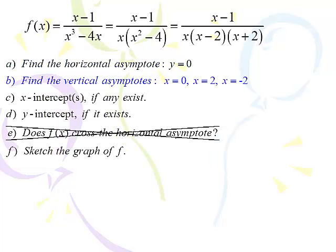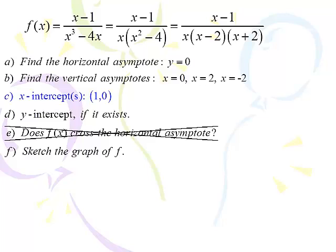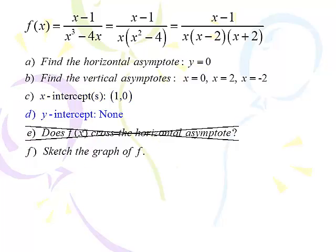Factoring the denominator: pull out an x, giving x(x²-4), which factors to x(x-2)(x+2). We have three vertical asymptotes at x equals 0, x equals 2, and x equals negative 2. So the y-axis is now an asymptote — you can't cross it. There's only one x-intercept: if x equals 1, the numerator is zero, so we cross the x-axis at (1, 0). Y-intercept? None — the y-axis is a vertical asymptote, and vertical asymptotes are sacred.